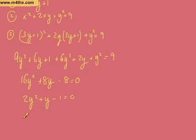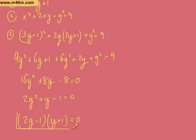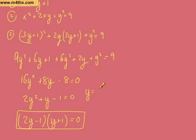And this will factor. We can have (2y minus 1)(y plus 1). I'll let you factor that, but hopefully looking at it, it should come up with that. So what we can see from here is that y is going to either equal positive 1 half, or y would equal negative 1.